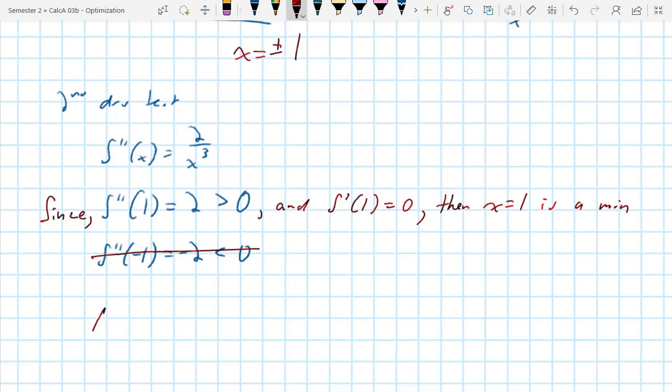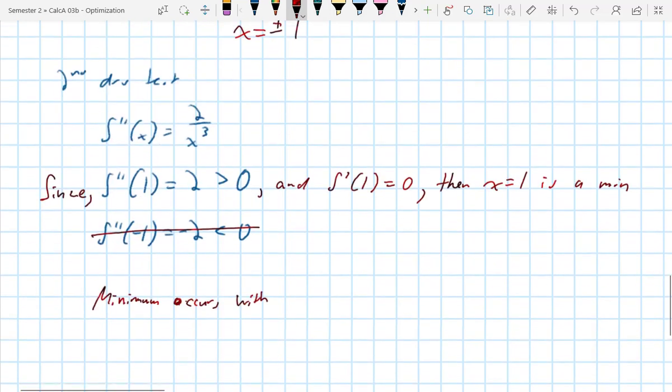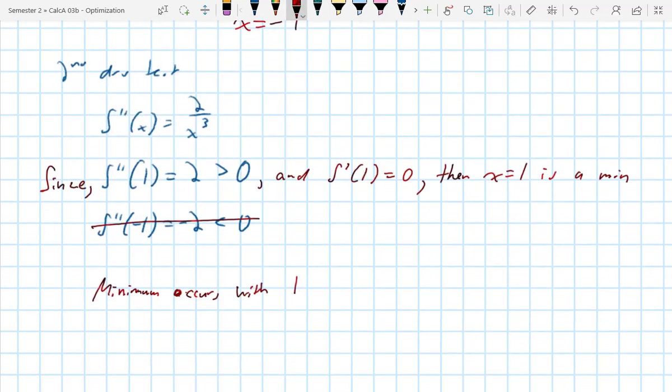So we can say minimum occurs with, and we just say what the two numbers are. A number is reciprocal, so 1 and 1 because 1 is its own reciprocal.